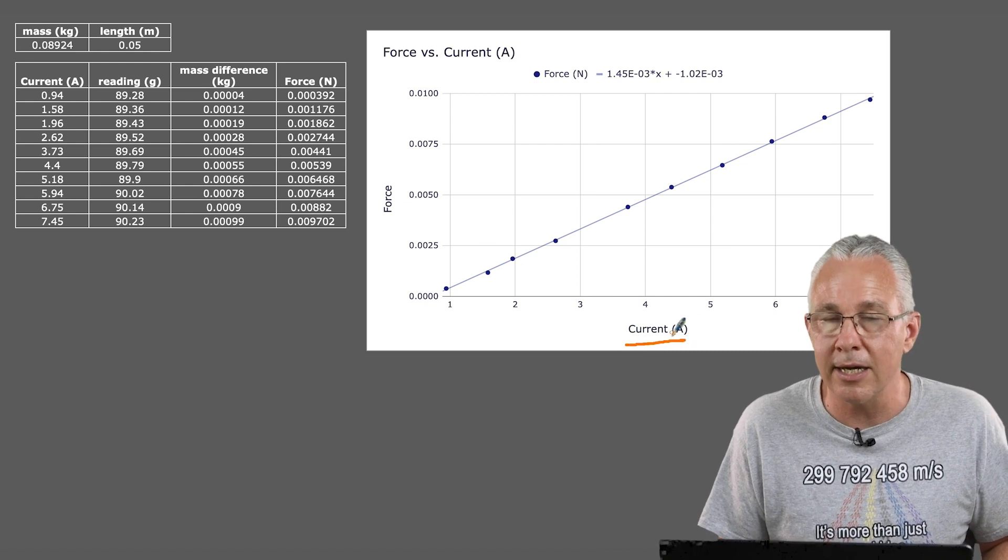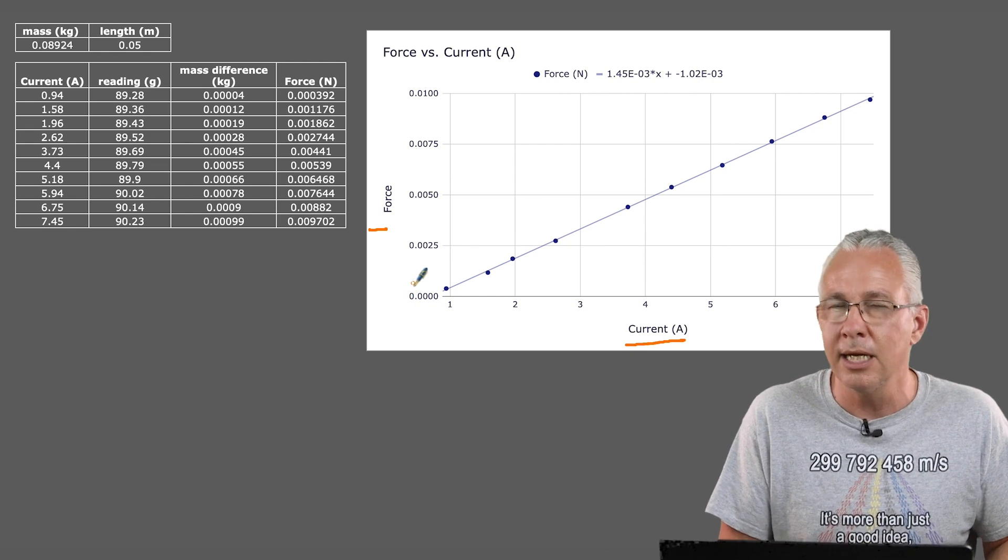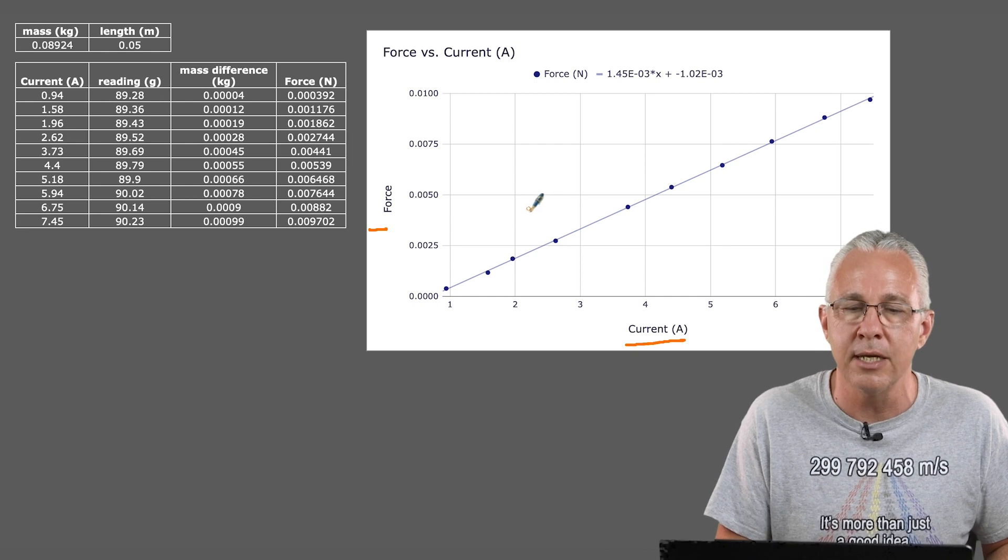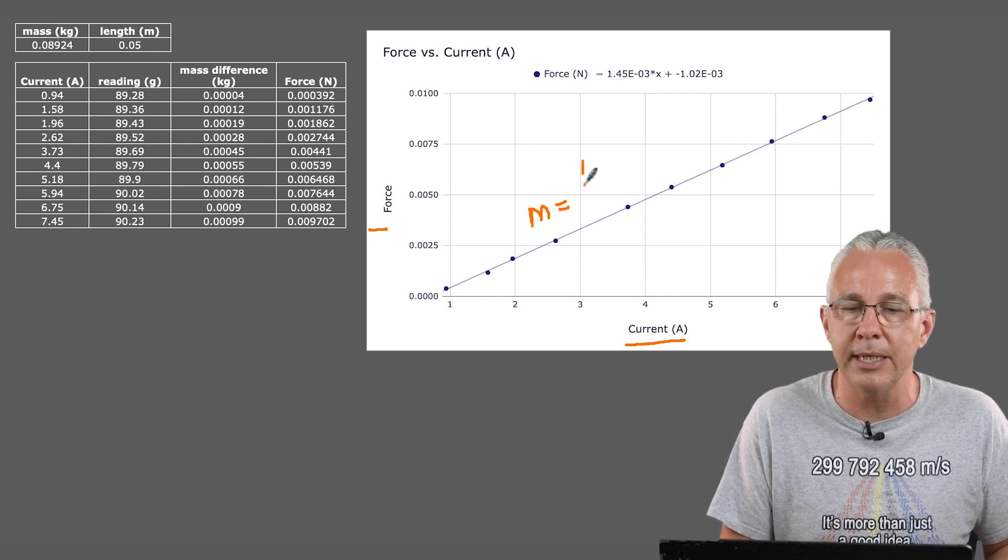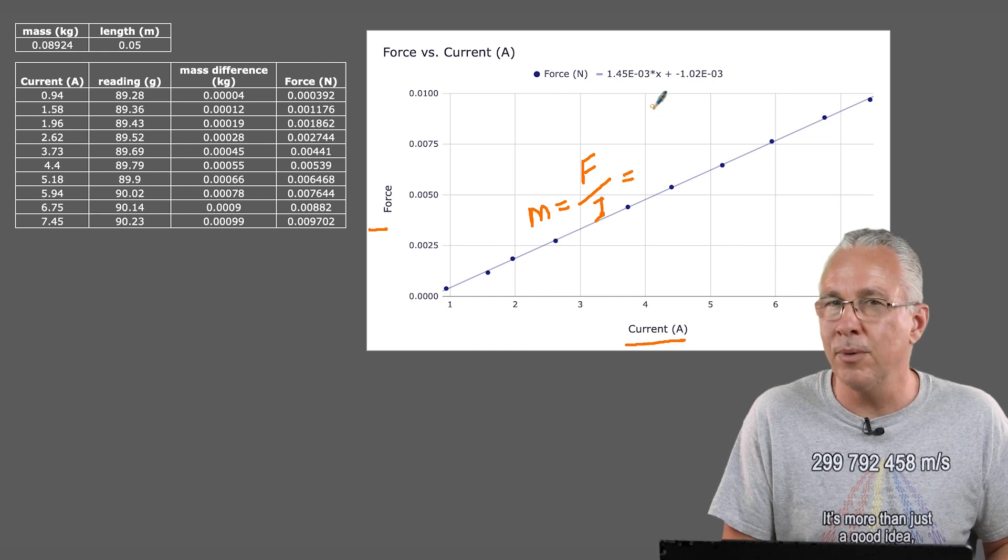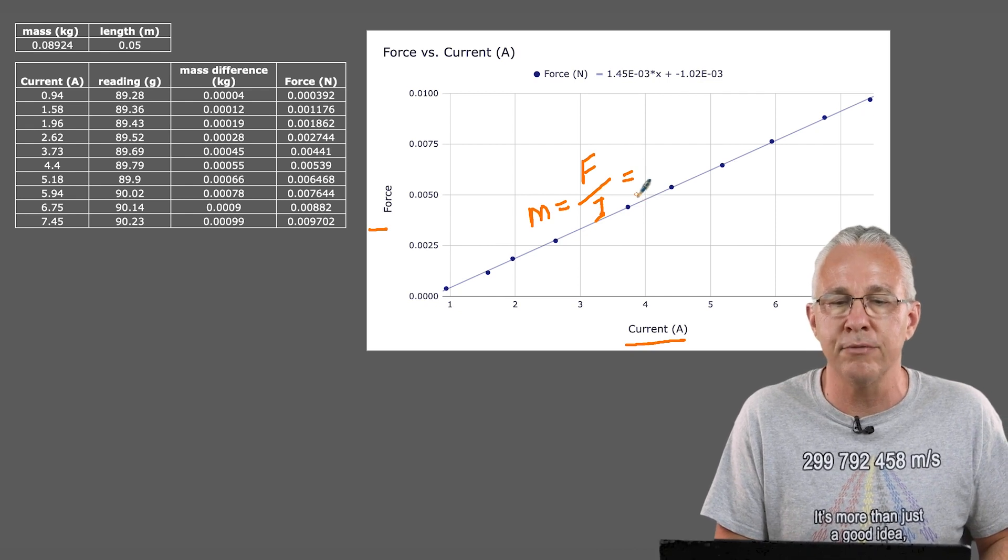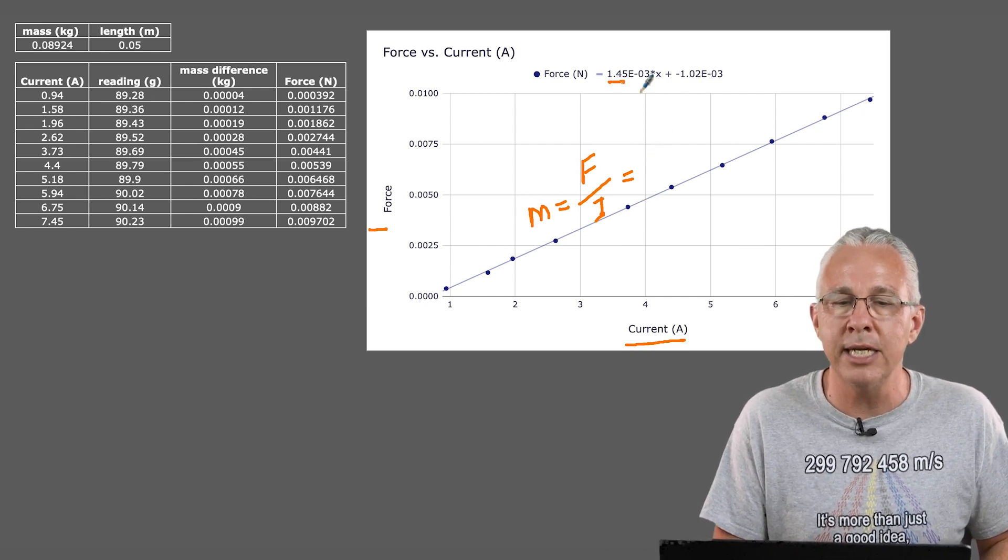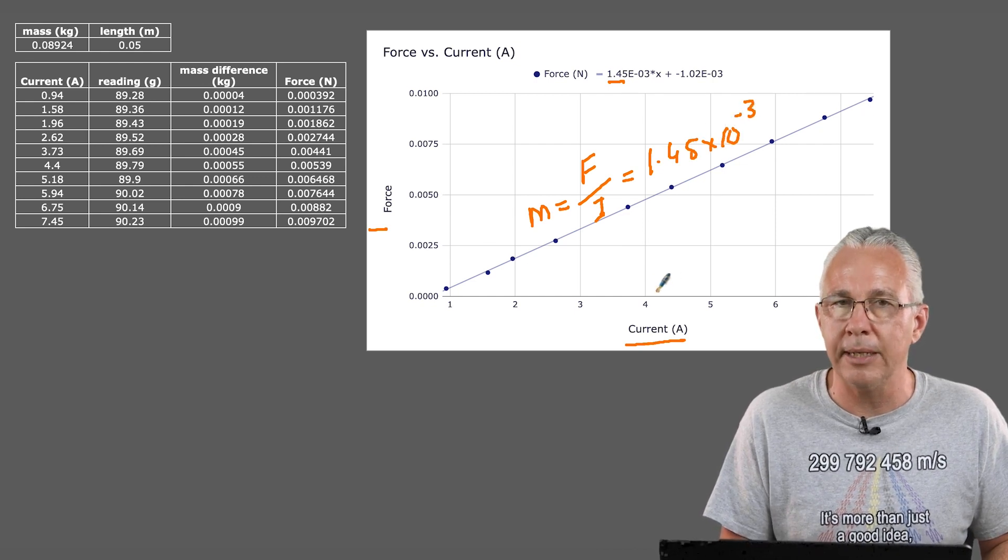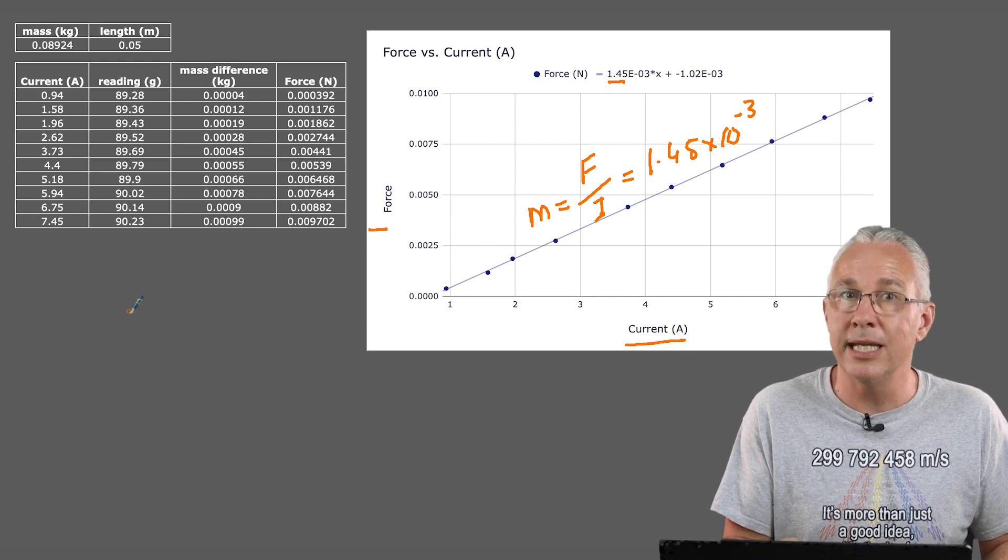And so now here is our graph, and it's a lovely linear graph too. We have our current on the x-axis and our force of the dependent variable on the y-axis. What can we determine here? Well, we can determine the slope. The slope of course is the rise over the run, and so therefore the slope is simply equal to the force divided by the current. But we've got the equation up here of this particular line that the Google Sheets has calculated for us. So the slope actually equals 1.45 by 10 to the power of negative 3.